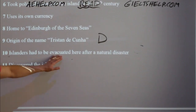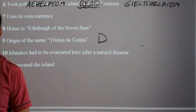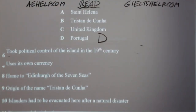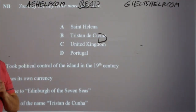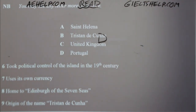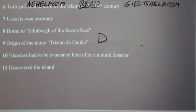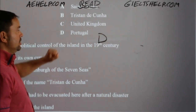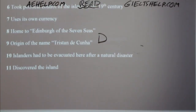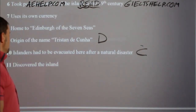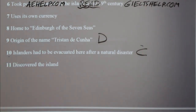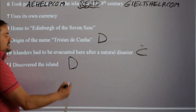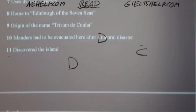Number ten — islanders had to be evacuated here after a natural disaster. Abhishek says UK — yes, correct, so C. Be careful when putting answers in the answer sheet: you must put the letter, not the word. Number eleven — discovered the island. Pavan says D — that's Portuguese, the Portuguese captain. So this is a nice visual passage and a good one to practice with. Some passages are more visual — like this one. Others, about sociology or fine art or philosophy, are less visual. But if you practice visualization, you can get good at this technique for any passage.